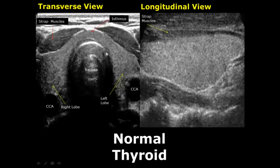The trachea has shadows due to presence of air, and anterior to the thyroid are the strap muscles. These are the strap muscles, and these anechoic regions are the common carotid arteries in cross-section.